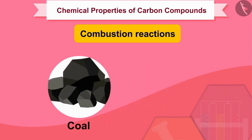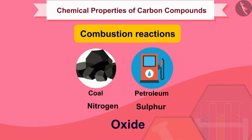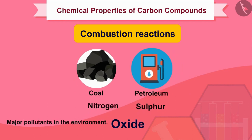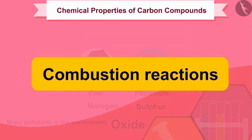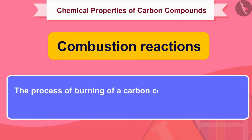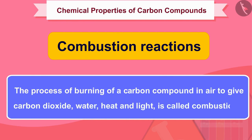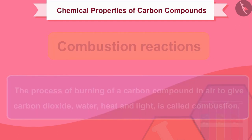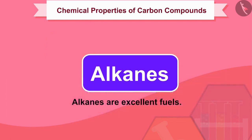Fuels such as coal and petroleum have some amount of nitrogen and sulfur in them. Their combustion results in the formation of oxides of sulfur and nitrogen, which are major pollutants in the environment. The process of burning of a carbon compound in air to give carbon dioxide, water, heat, and light is called combustion. Alkanes burn in air to produce a lot of heat, due to which alkanes are excellent fuels.